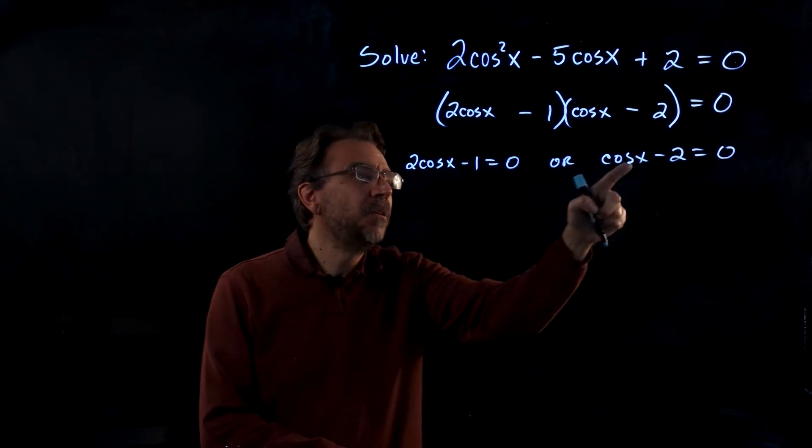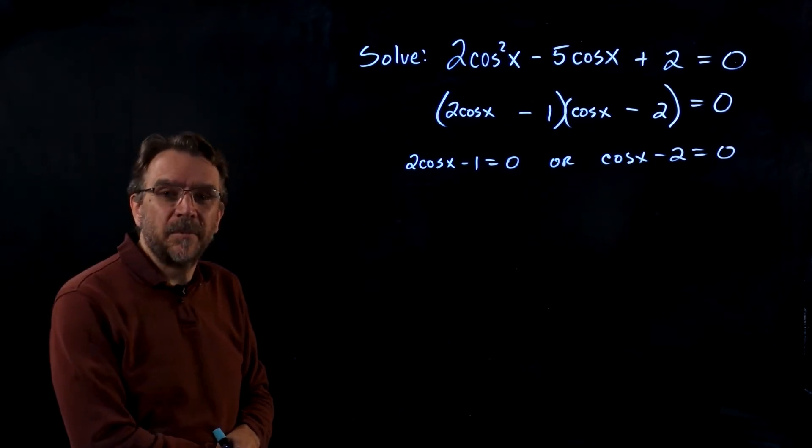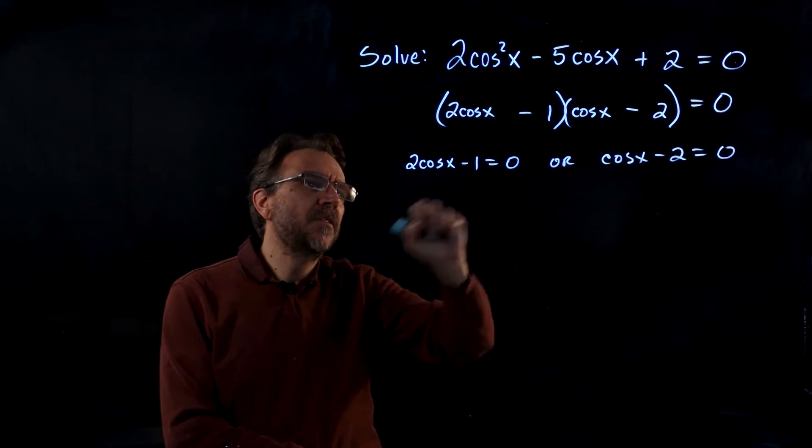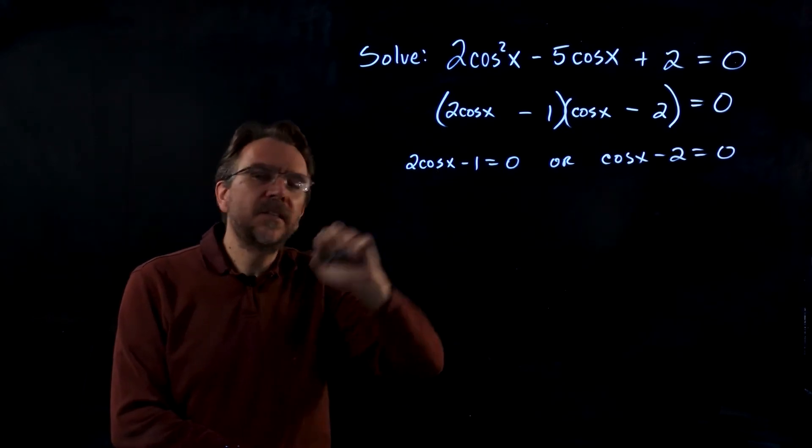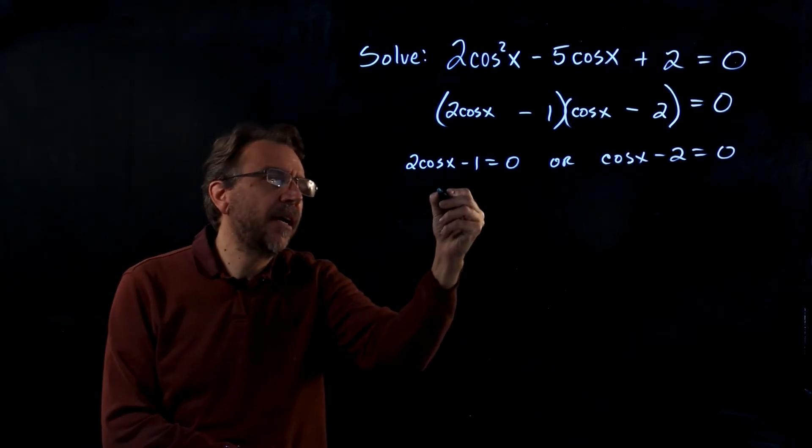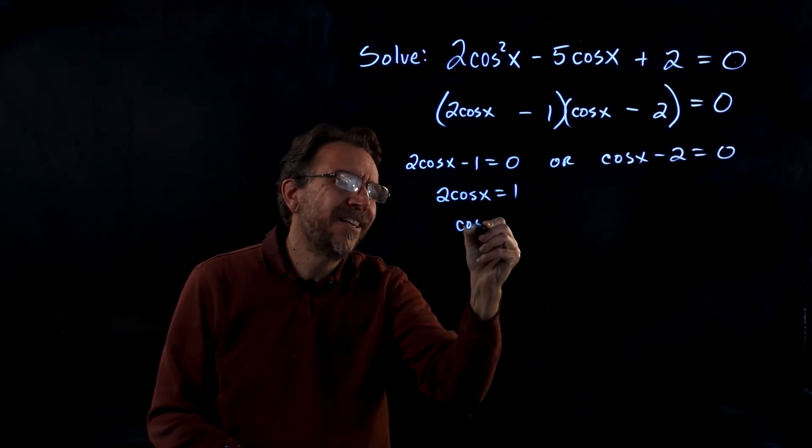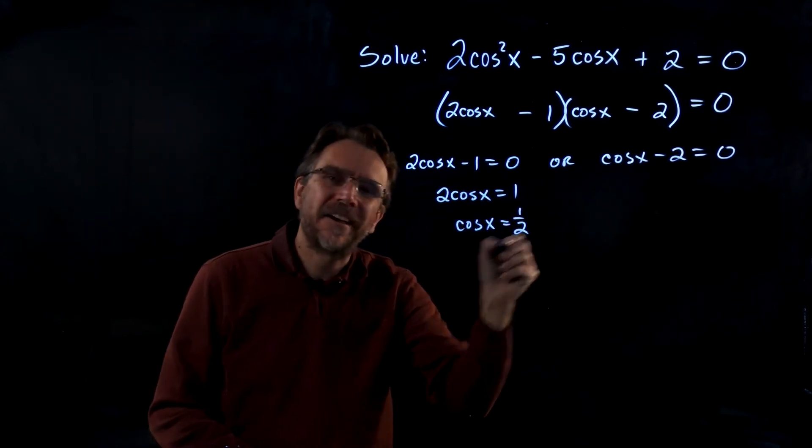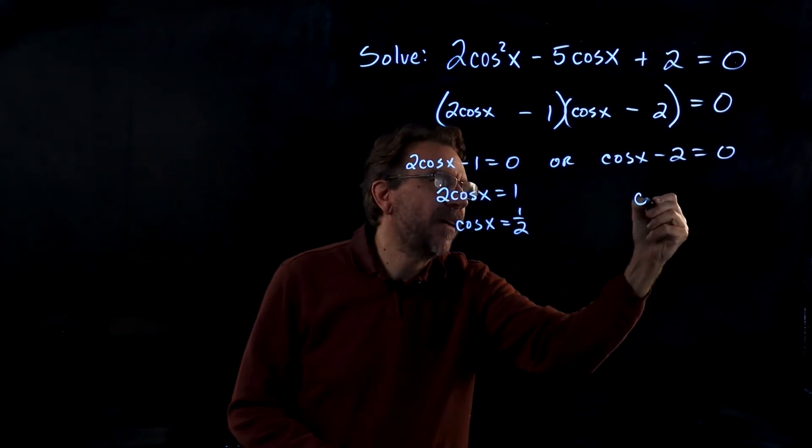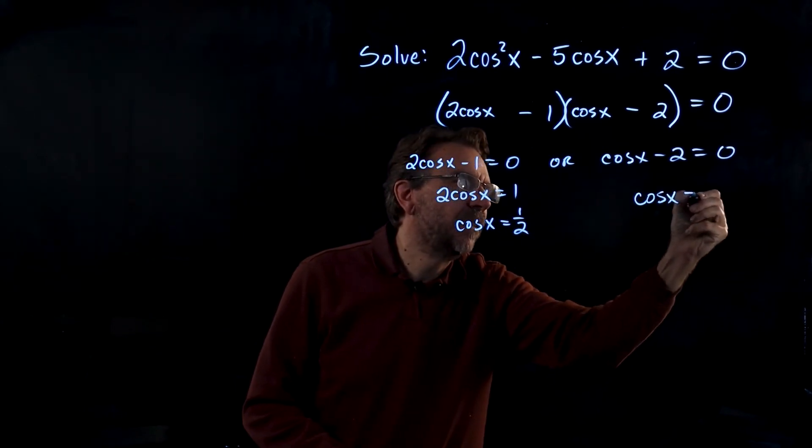This leaves us with two linear trigonometric equations. So we can solve each one of these. Let's isolate the cosine on both of them, and we'll have 2 cosine x equals 1, cosine x equals 1 half. Now on this one we'll have, adding the 2, we'll have cosine x equals 2.